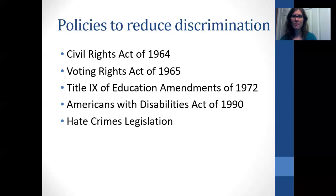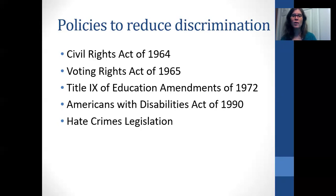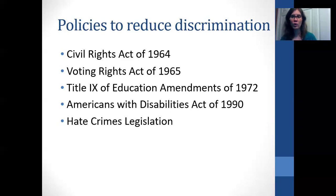The Voting Rights Act of 1965 addressed discriminatory voting laws. Prior to 1965, polling taxes, land requirements, and literacy tests were all directed at preventing certain groups from voting. The Voting Rights Act eliminated those obviously discriminatory voting laws. That does not mean we don't still have discriminatory voting laws today — they are just less apparent in how racist they are. You'll be watching a video on how certain voting laws still disproportionately impact certain groups.